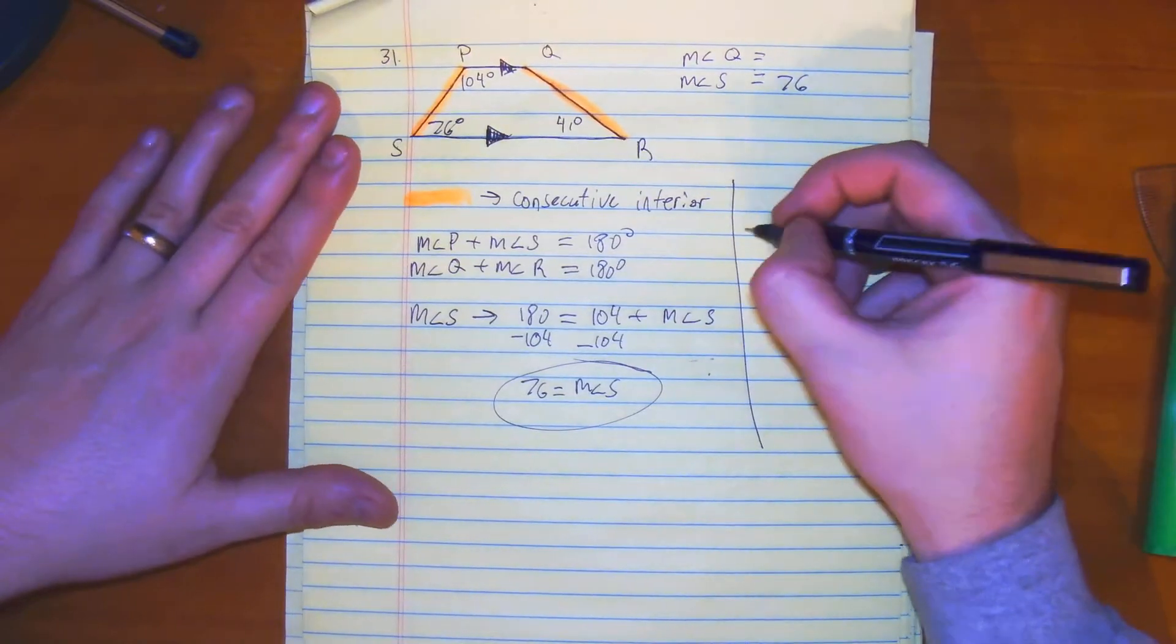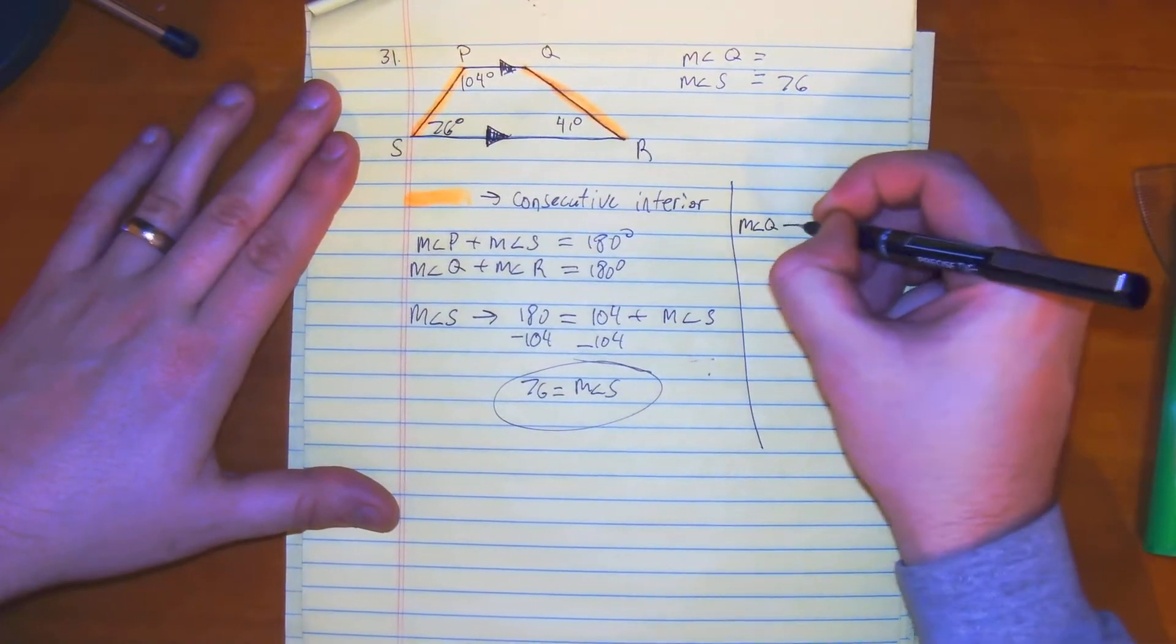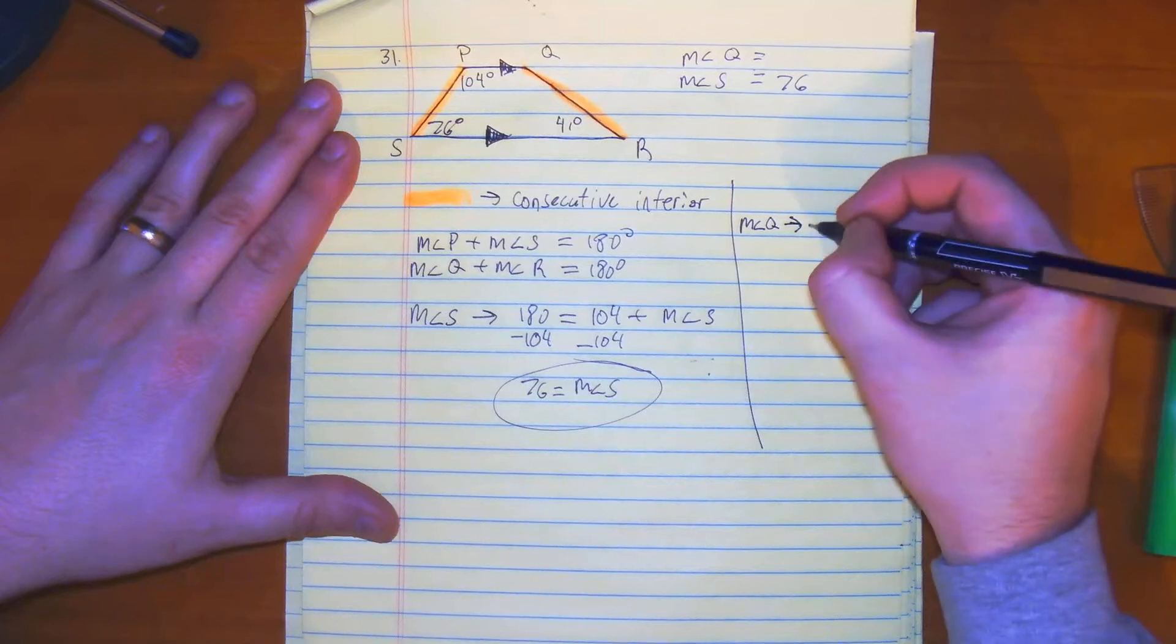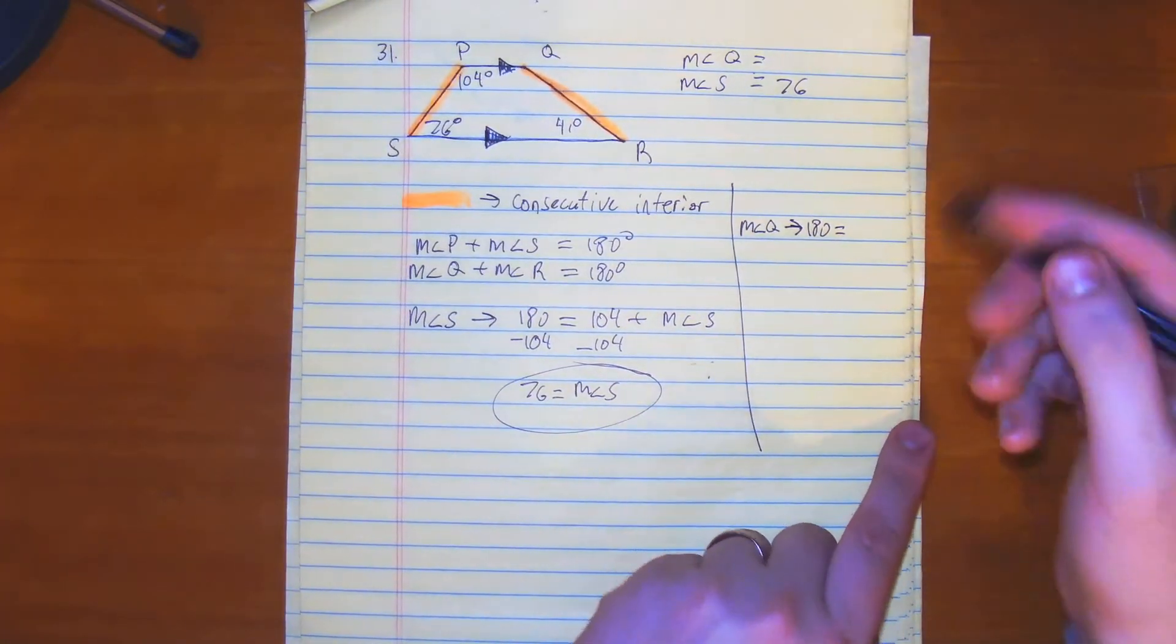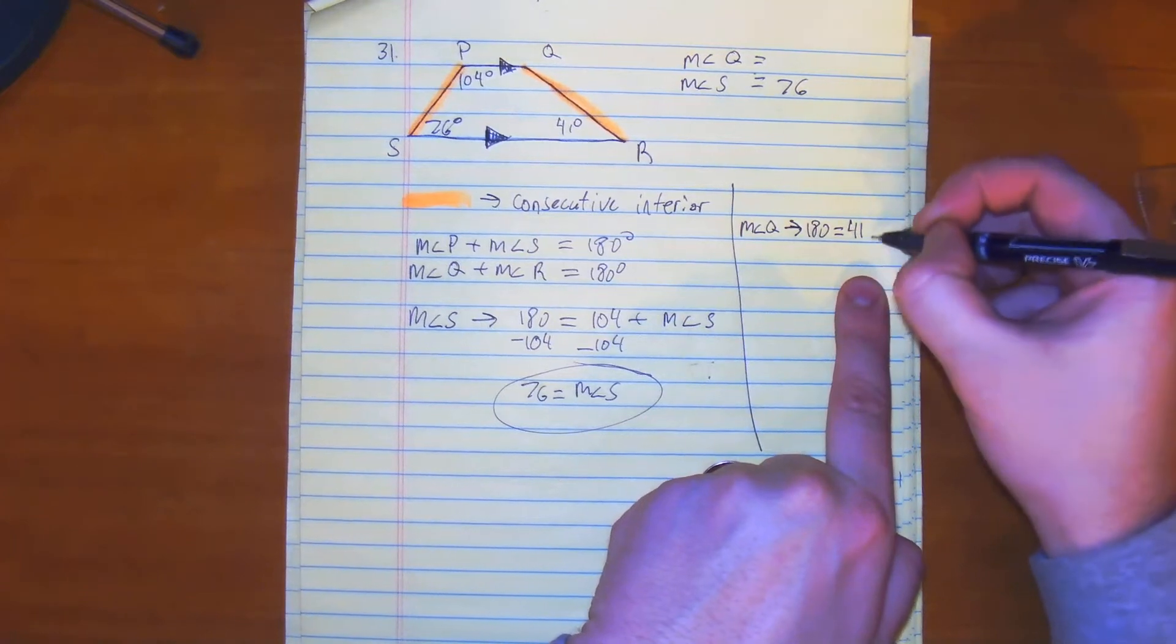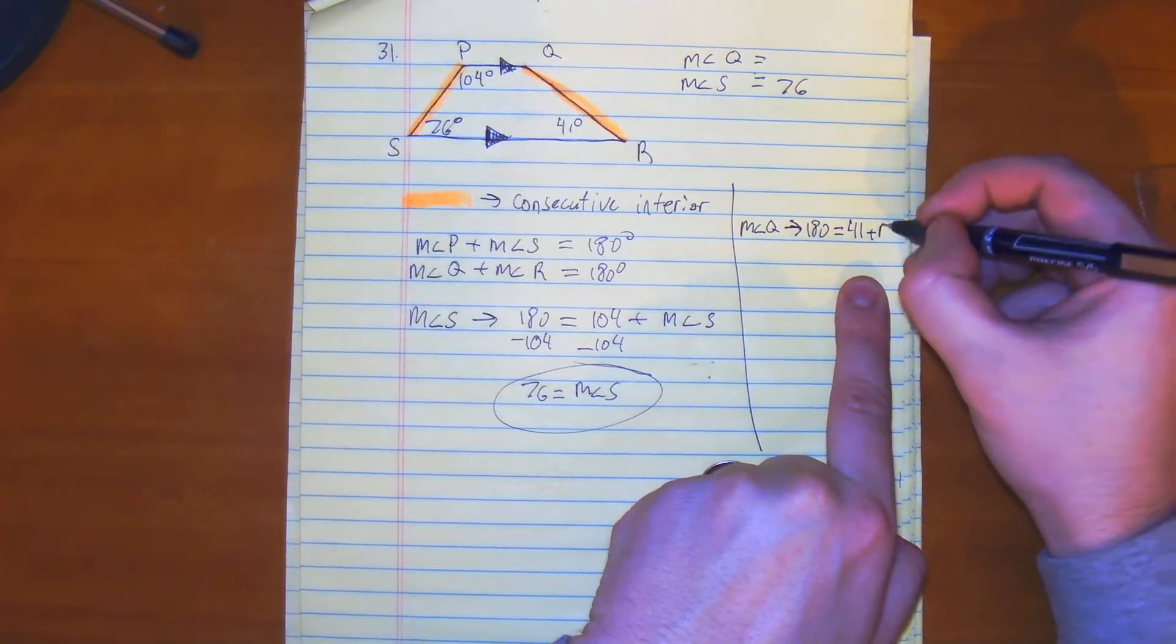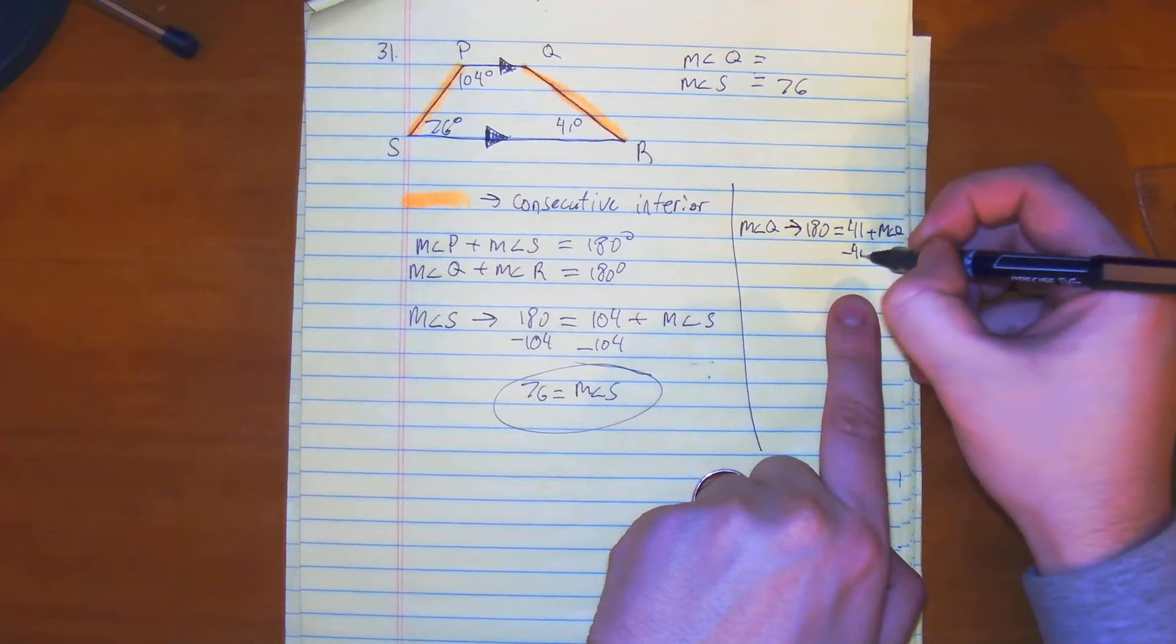And then to find the measure of angle Q. So that would be 180 is equal to 41 plus the measure of angle Q. We subtract 41.